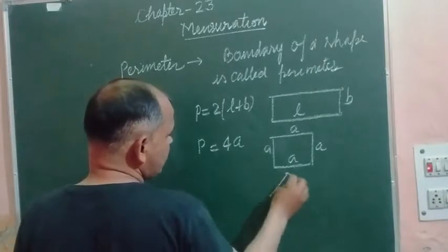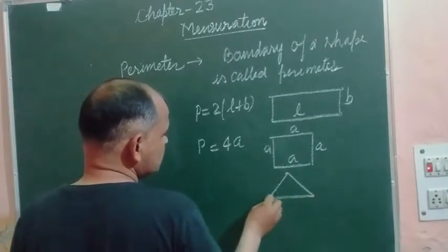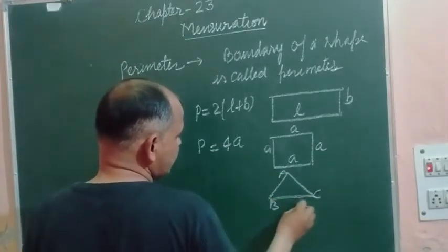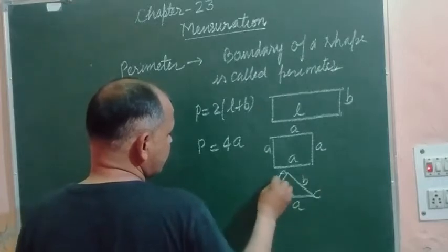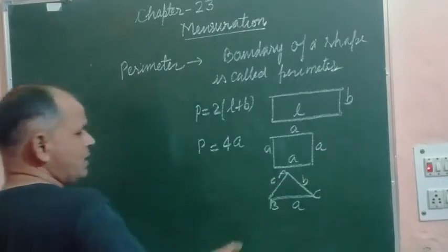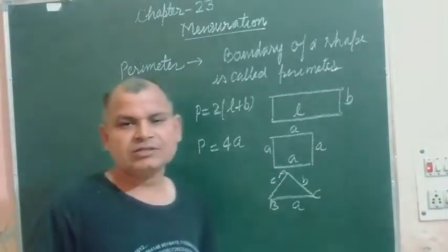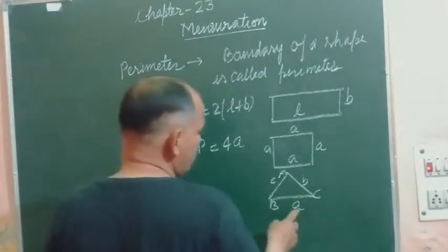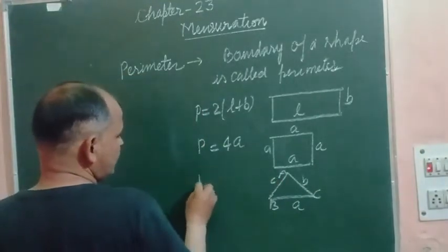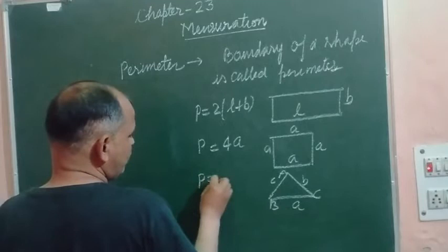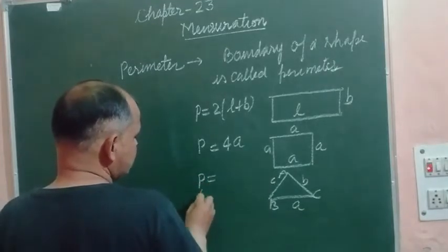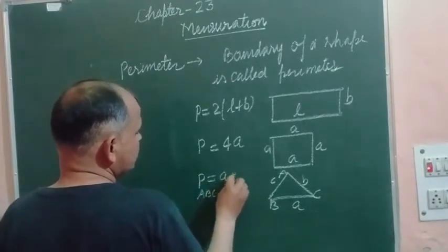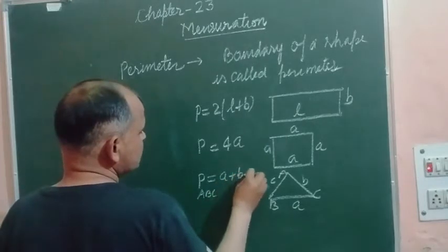Perimeter of a triangle: a triangle has three sides A, B, and C. The side opposite to vertex A is A, side B is B, and side C is C. So perimeter of triangle equals A plus B plus C.